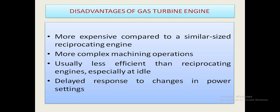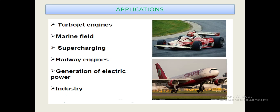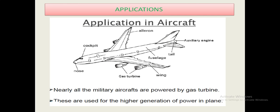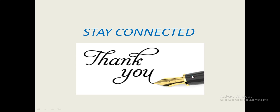Main applications of gas turbine engine include turbojet engines, marine field, supercharging, railway engines, generation of electric power, and various industries. In the field of aviation, nearly all military aircraft are powered by gas turbines, used for higher generation of power in planes. These are all the basics of the gas turbine engine. If you want to get more videos, please like, share, and subscribe to my channel. Thank you.